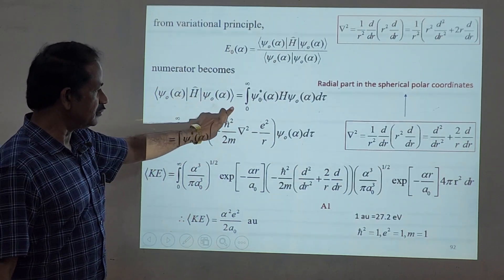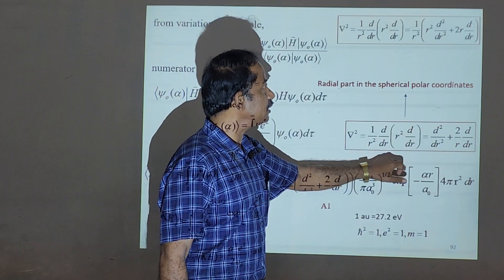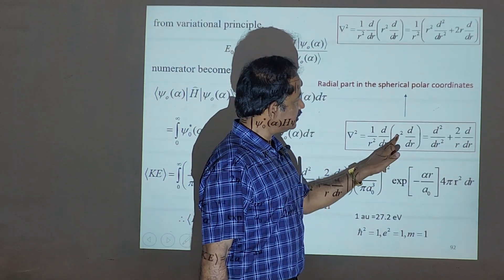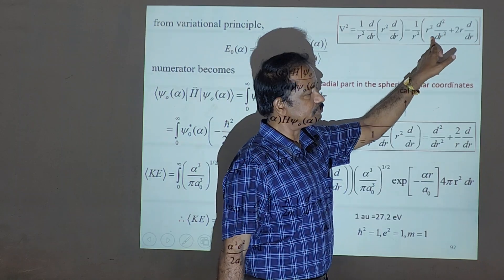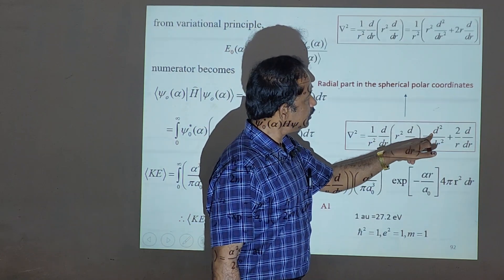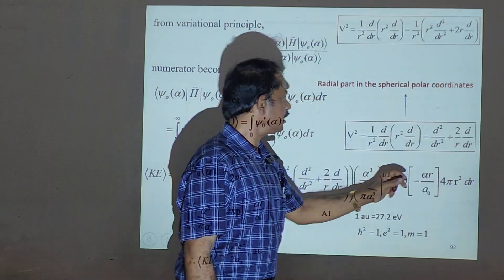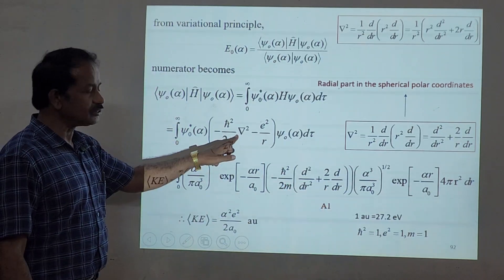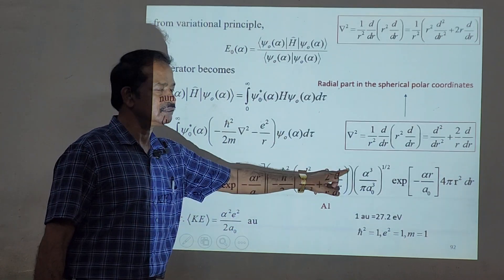For the kinetic energy term, the Laplacian del² in spherical coordinates (for the radial part, since l=0) can be written as (1/r²)(d/dr)(r²)(d/dr), which expands to d²/dr² + (2/r)(d/dr). This replaces del² when applied to the radial wave function. We take only the kinetic energy part sandwiched between ψ* and ψ.